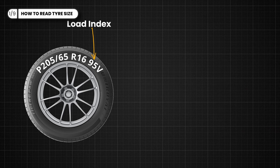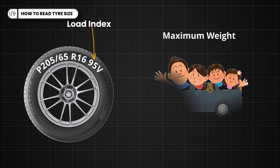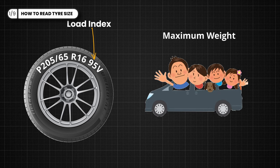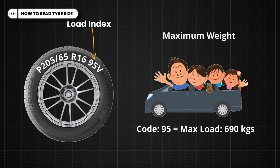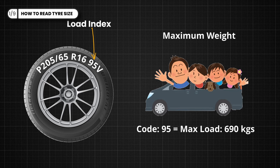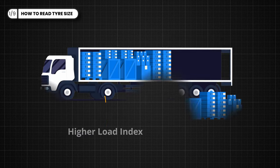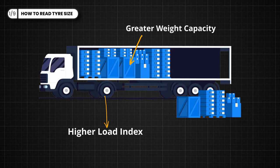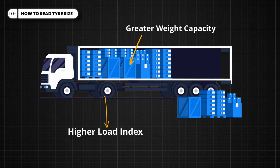The 95 indicates the load index — a numerical code that indicates the maximum weight a tire can support when properly inflated. A load index of 95 can support a maximum load of 690 kilograms. The higher the load index number, the greater the weight capacity of the tire.